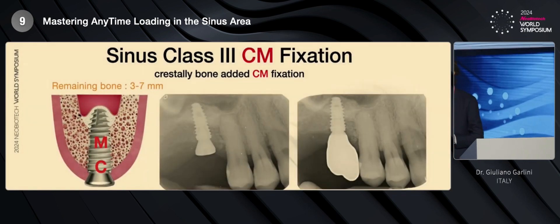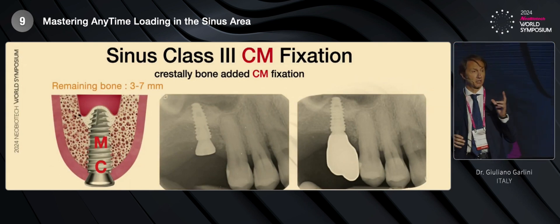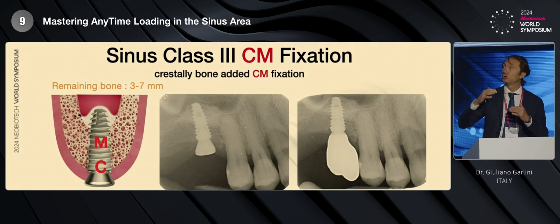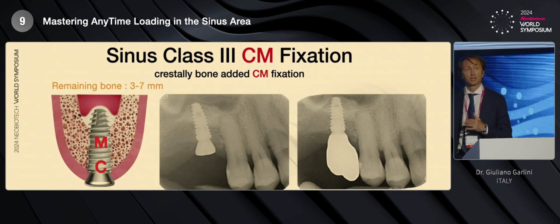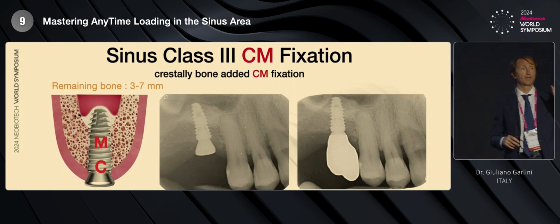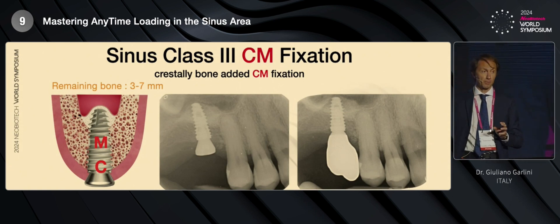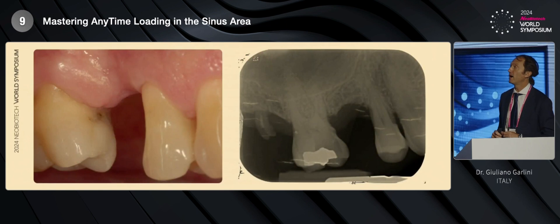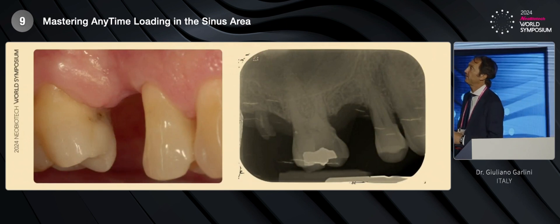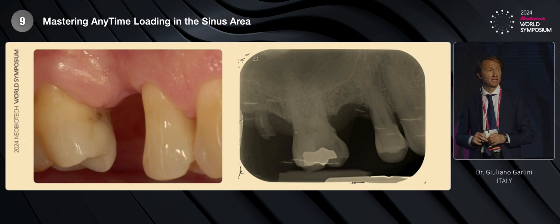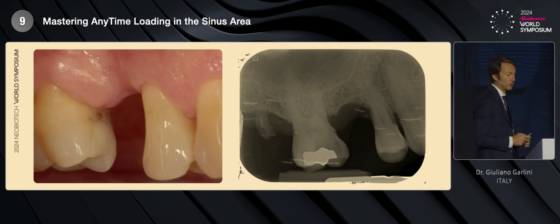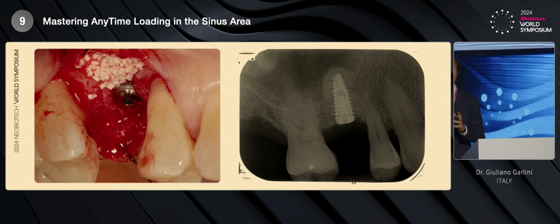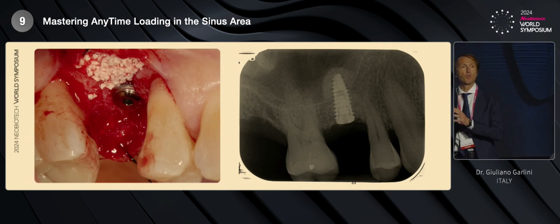The patient had the need to insert another implant in the molar area, and this is a case of sinus class 3 CMI fixation. This case permits me to introduce sinus class 3 CMI fixation. It is the situation where we have only three to seven millimeters of bone left, so we cannot have a fixation in the apical part of the implant. We have fixation only in the coronal part and in the middle part of the implant. Once again, I show you my first case from 2014. In this case, we have more or less four millimeters of residual alveolar crest bone, so I inserted the implant and increased the volume of the soft tissue, but at that time — ten years ago — I proceeded with a delayed loading.